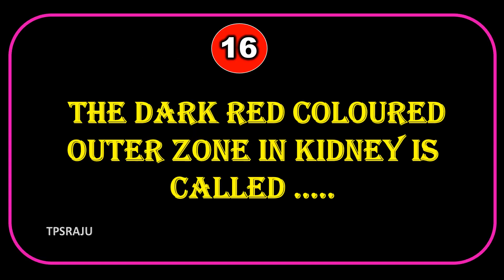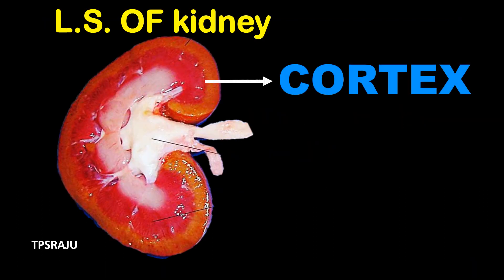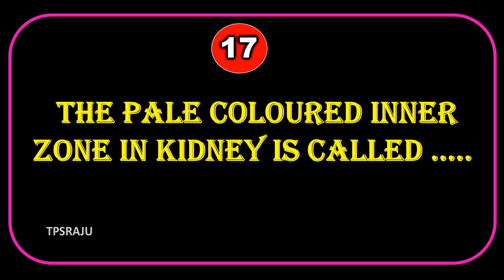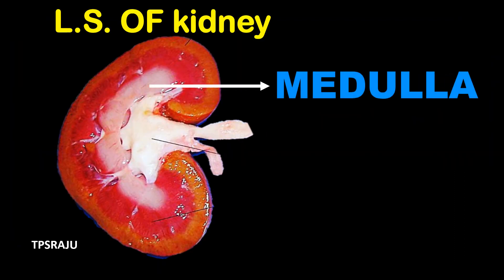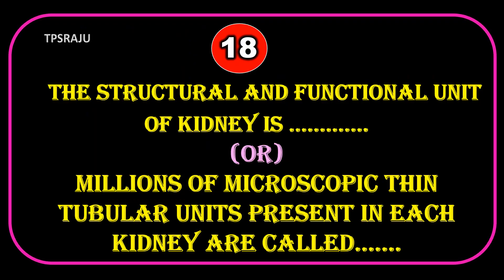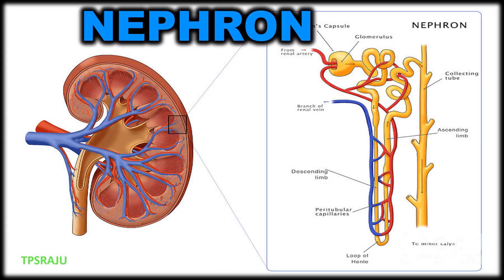The dark red colored outer zone in the kidney is called the Cortex. The pale colored inner zone in the kidney is called the Medulla. The structural and functional unit of kidneys, or millions of microscopic thin tubular units present in each kidney, are called the Nephron.